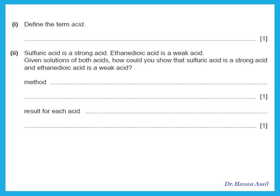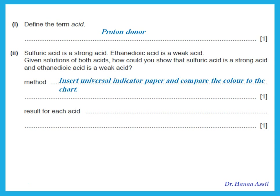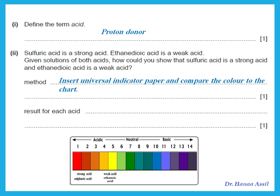Define the term acid: an acid is a proton donor. Sulfuric acid is a strong acid; ethenediobic acid is a weak acid. Given solutions of both, how could you show that sulfuric acid is strong and ethenediobic acid is weak? Use universal indicator paper, insert it into each solution, and compare the color to the chart. The strong acid should have a lower pH — specifically pH 1 to 3 — giving a red color. The weaker acid, ethenediobic acid, would have pH 4 to 6, giving a yellow or orange color.